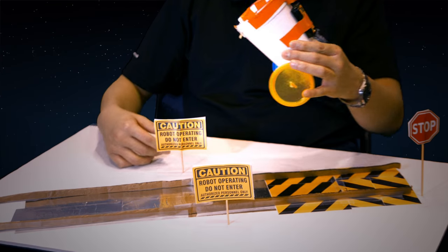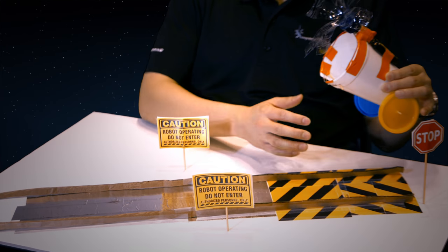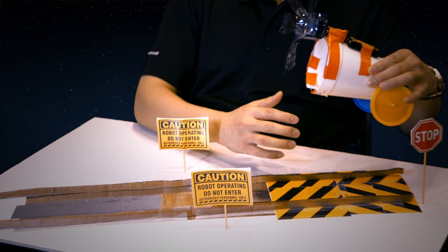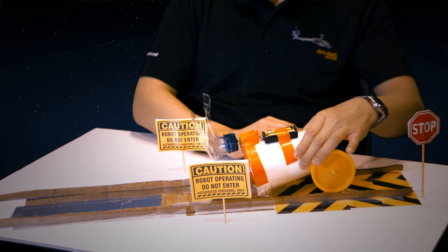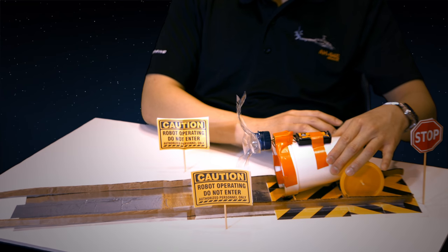And then whenever it reaches the yellow stripe area here, which is like a restriction area, the paper here on this area acts as an insulation, so when it reaches the restriction area, it will stop.